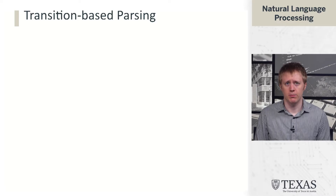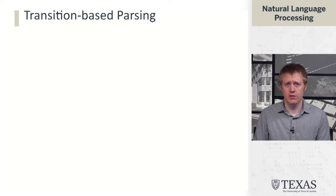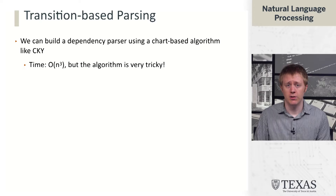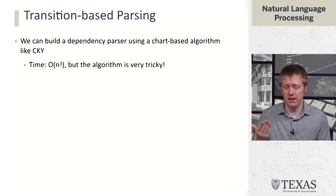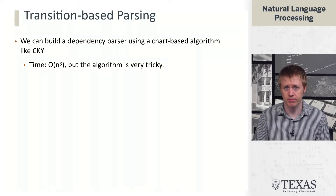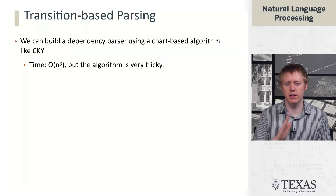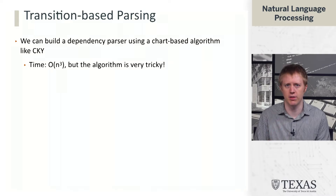In this segment, we're going to talk about building a transition-based dependency parser. We could try to build our dependency parsers in the same style as our constituency parser using something like CKY. There are chart-parsing algorithms, dynamic programs for doing inference in dependency spaces. The time ends up being the same cubic time in the length of the sentence, and the algorithm ends up being quite a bit trickier than the basic CKY. But instead, we're going to talk about a different style of parser, just to give you a sense of the space of algorithms that people use.